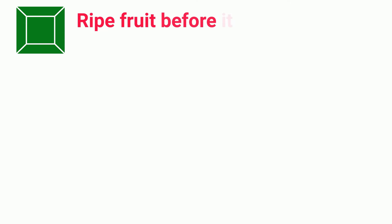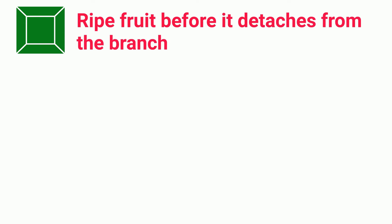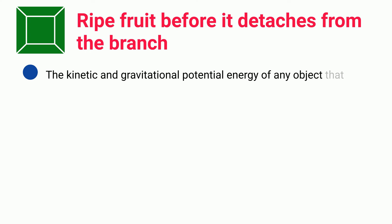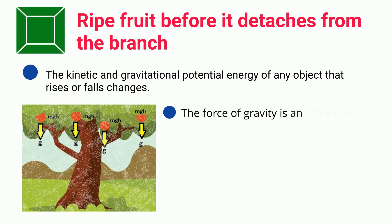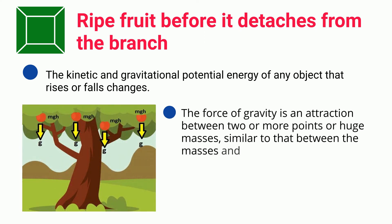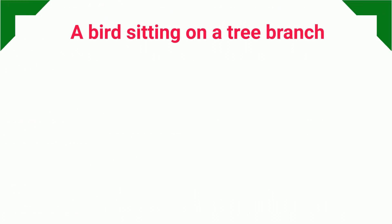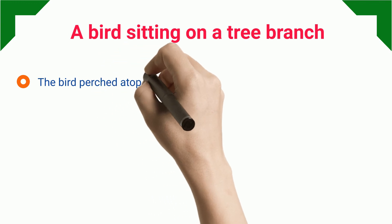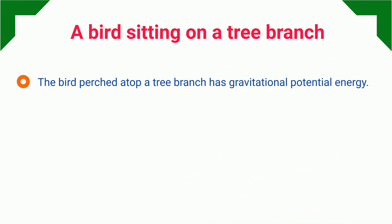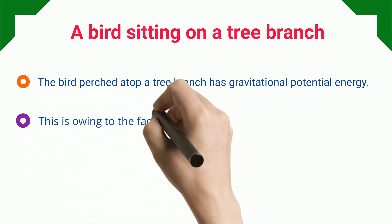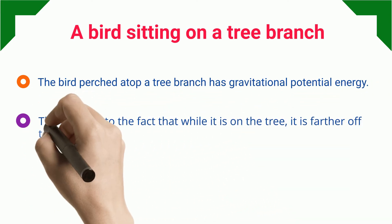The kinetic and gravitational potential energy of any object that rises or falls changes. The force of gravity is an attraction between two or more masses, such as between the fruit and the earth, making it the determining factor in weight — hence the fruit possesses gravitational potential energy. Similarly, a bird perched atop a tree branch has gravitational potential energy, owing to the fact that it is farther from the ground than if it were on the ground.